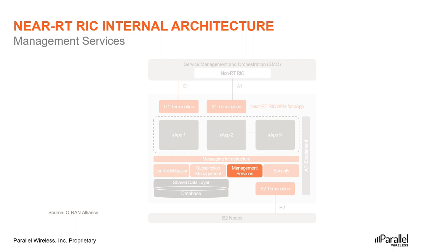Messaging infrastructure provides low-latency message delivery service between near-RT RIC internal endpoints. There are three different types of management services: first, lifecycle management of X-Apps, which provides functionality related to onboarding, deployment, resource management, and termination of X-Apps; second, support for FCAPS management — consisting of fault, configuration, accounting, performance, and security management — as a service producer to SMO; and finally, logging, tracing, and metrics collection, which captures, monitors, and collects the status of near-RT RIC internals and can be transferred to an external system for further evaluation.